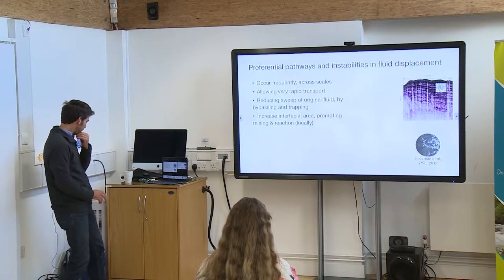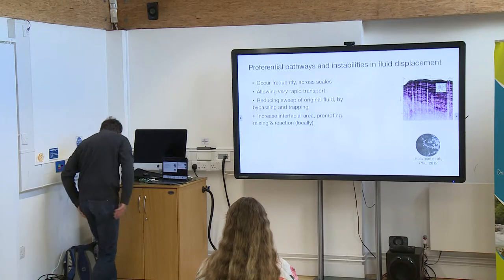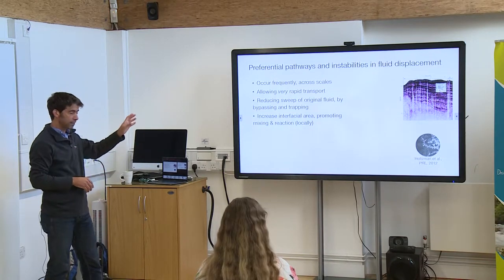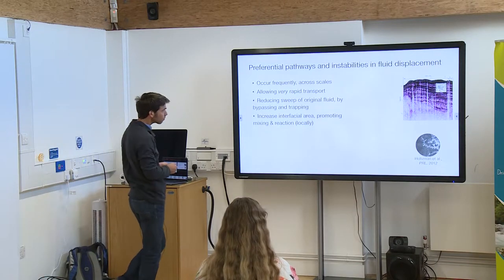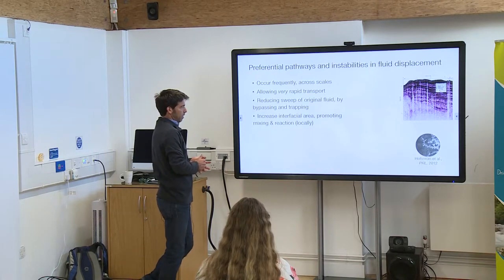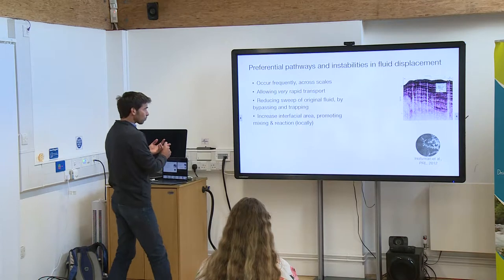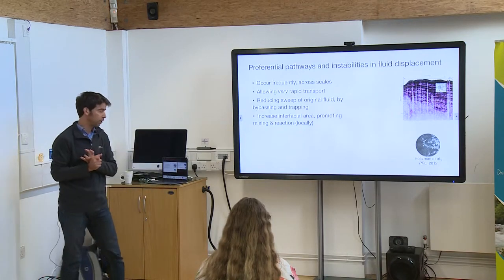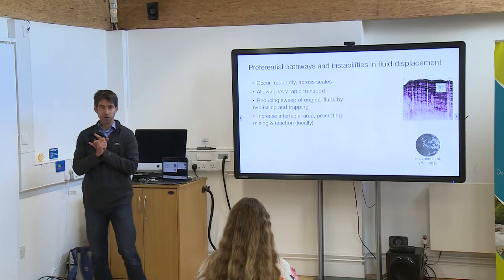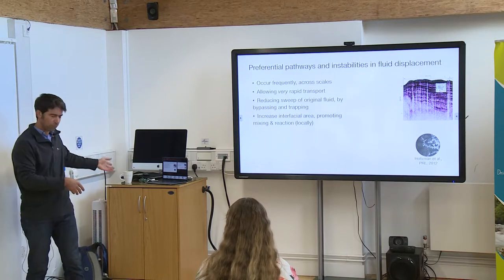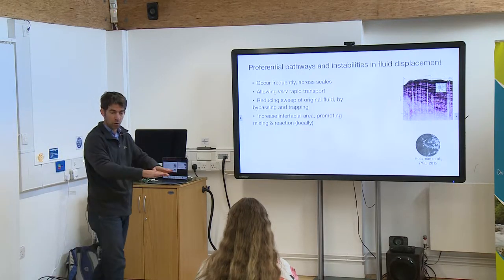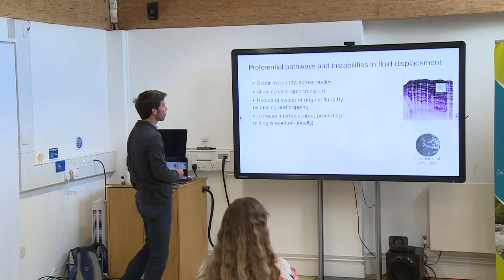For the next 20 minutes or so, I'll focus on preferential pathways due to instabilities in fluid-fluid displacement — one fluid like a gas displacing a brine — and look at why these pathways form, for different reasons, and how we model them. This happens very often; it's more the norm than the exception. When you pour water or make coffee, things don't percolate evenly. If you have an oil spill, it will never go in a nice layer — there's always some fingering, some preferential pathways at different scales.